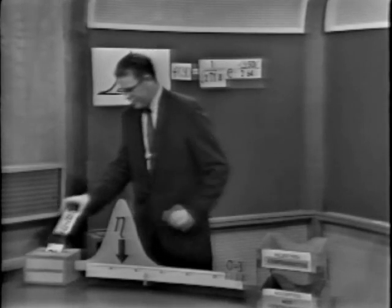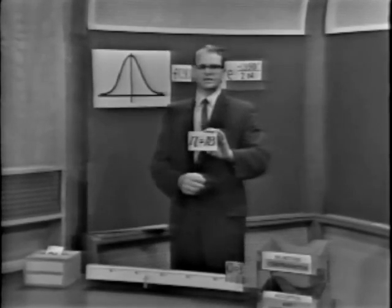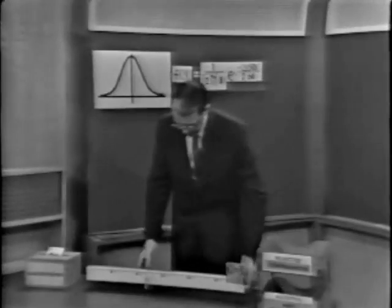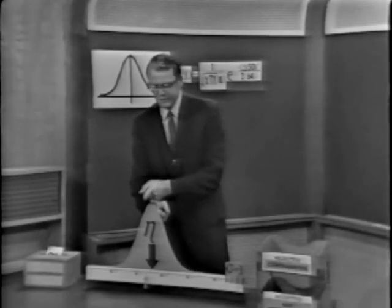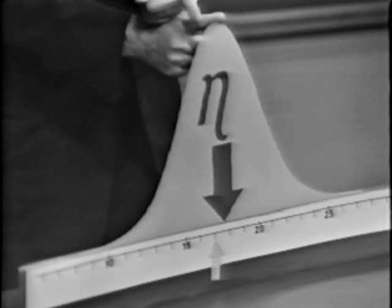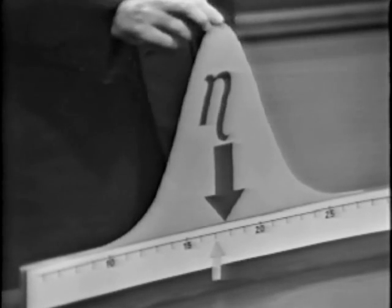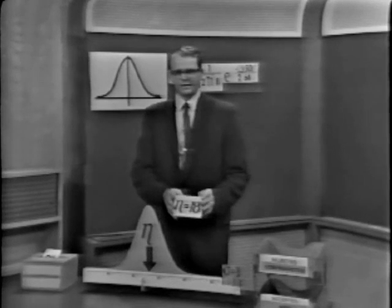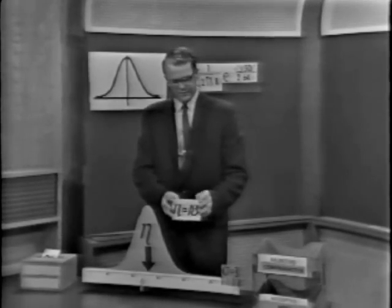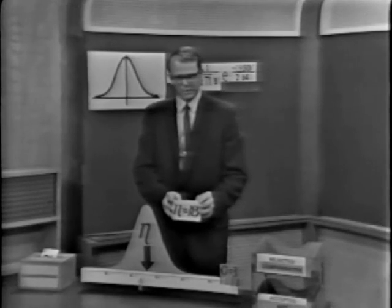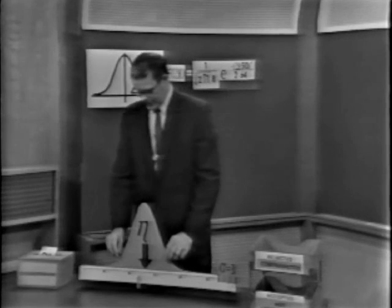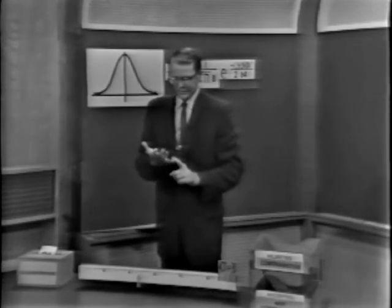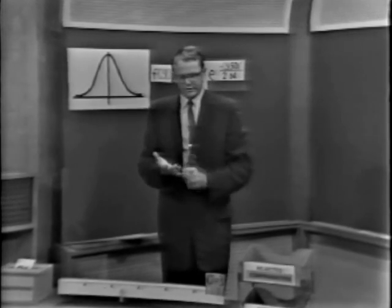Suppose someone says eta is 18. We quickly locate the distribution at 18 and calculate the normal deviate, which comes out equal to 0.33. That's a lot less than 1.64, so the event is not a rare event in the light of the data. We decide that eta = 18 is indeed an acceptable value. Now, just to quickly review what we've done — in order to do a test of significance, we have...